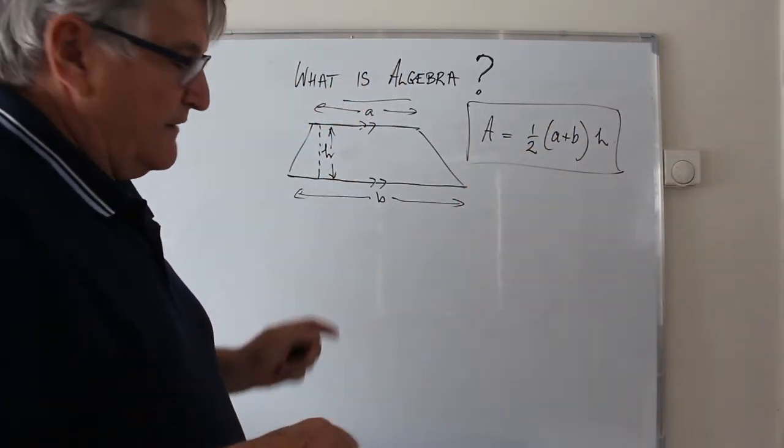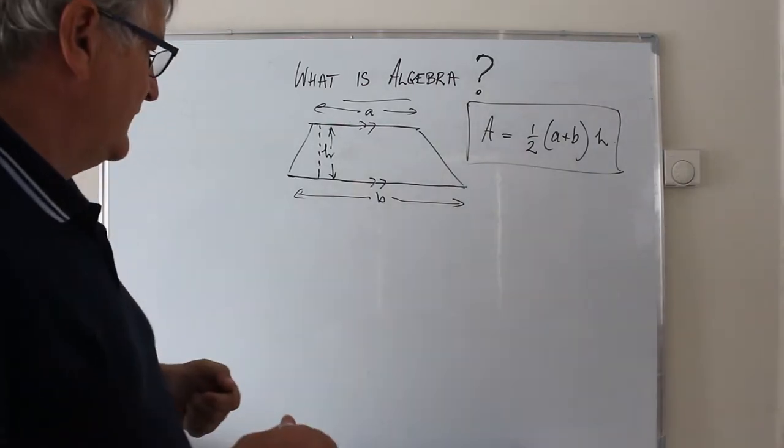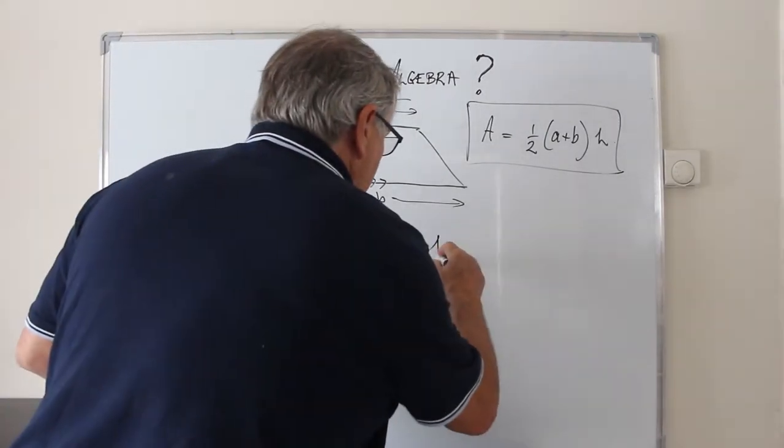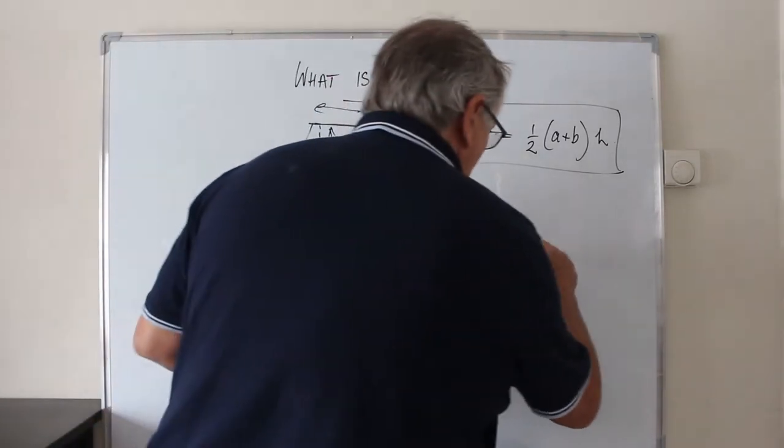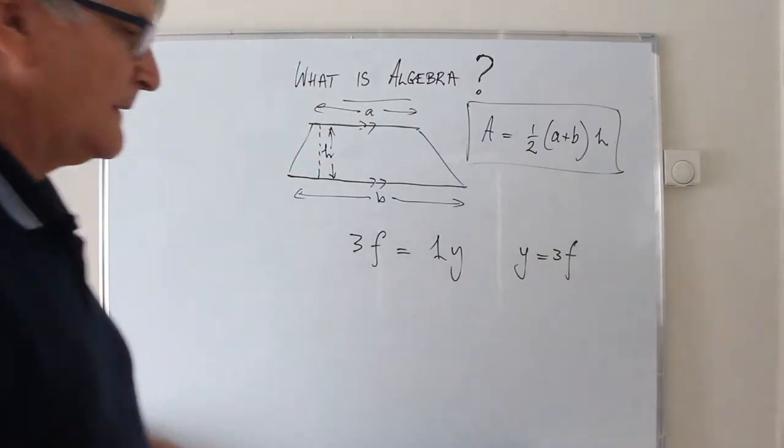One that's gone out of fashion a little bit, but if I was to use an example of feet and yards. If I said 3 feet is equal to 1 yard, I would end up with a formula that says y equals 3 times f. Wrong.